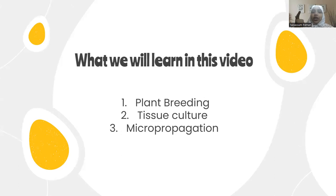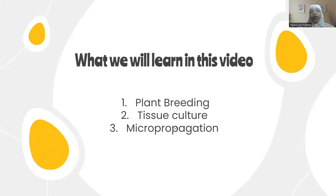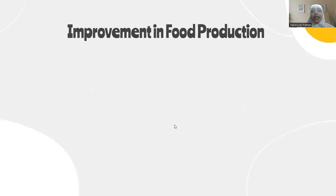Under plant food production, three important topics we are going to learn are: plant breeding, tissue culture, and micro-propagation. Tissue culture and micro-propagation were touched upon in the introductory part of the very first chapter on sexual and asexual reproduction of lower and higher plants. We are going to cover these in detail here.